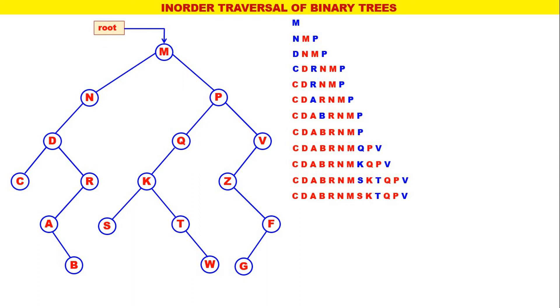Next, the leftmost is T. The inorder for T is T, W with T processed. Next, the leftmost is W. The inorder for W is W only with W processed.